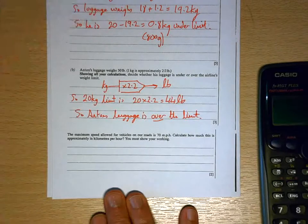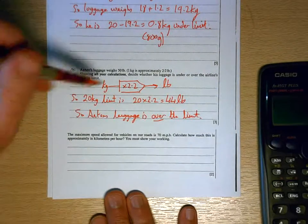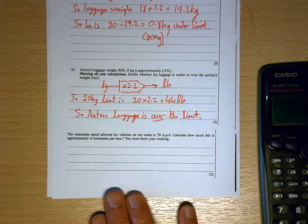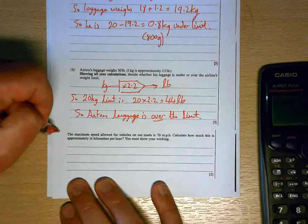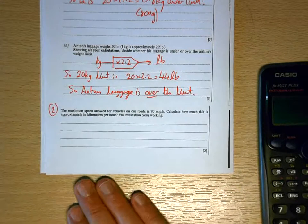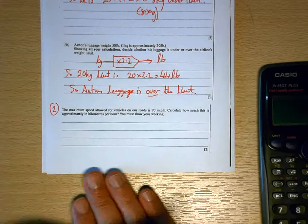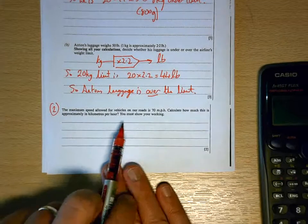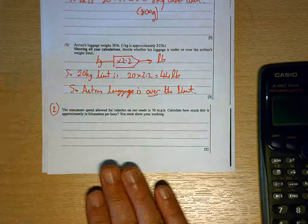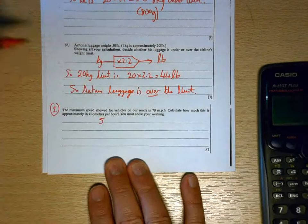All right, so quite a difficult question that's worth eight marks, but you need to be quite confident in changing grams into kilograms, kilograms into grams, and kilograms into pounds to get those marks. The second question is an equivalence again. This is one they're not giving you and you are expected to know, and that's the relationship between miles per hour and kilometers per hour.